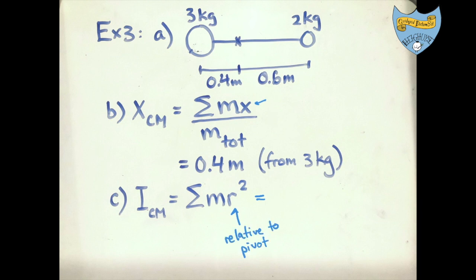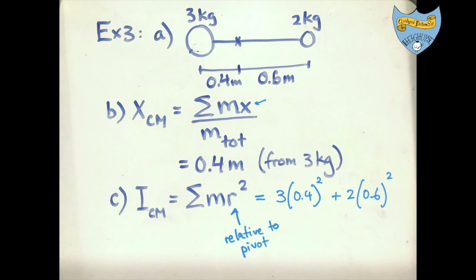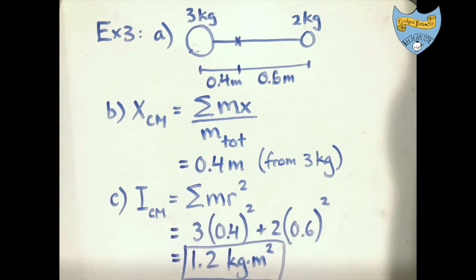In every equation in this unit, r represents a distance from the pivot. So the 3 kg mass is 0.4 meters from the pivot, and the 2 kg mass is 0.6 meters from the pivot. Plugging those into the formula I = Σ m r² gives us our answer of 1.2 kg·m². The later parts of this question deal explicitly with what happens if we put the pivot somewhere else.